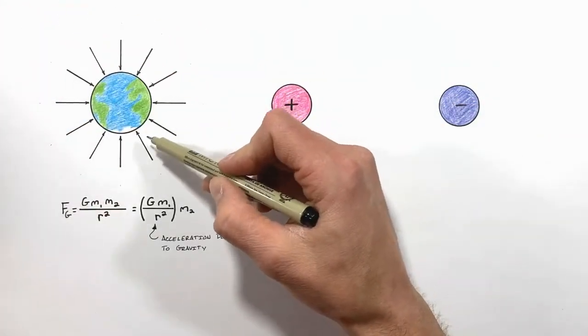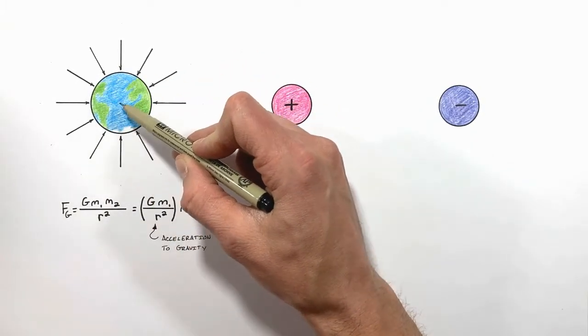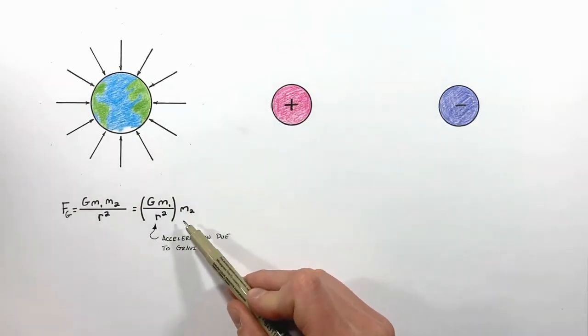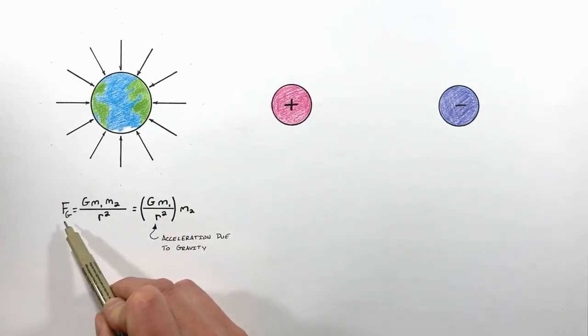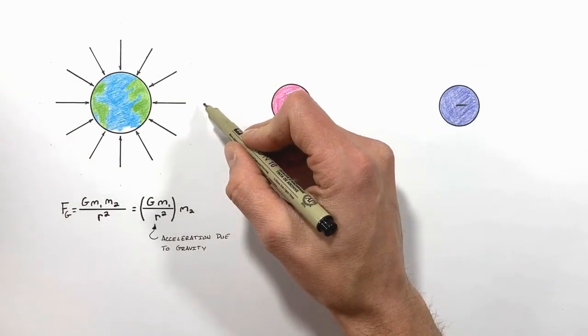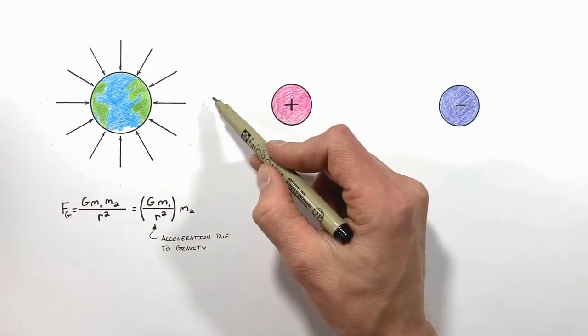These arrows show that regardless of where you are on the surface of the Earth, the acceleration due to gravity is always inward toward the center of the Earth. Now given this function, the farther away a mass is placed from the Earth, the weaker the force by gravity is going to be. We can show that reduction in acceleration due to gravity around the Earth by showing the arrows that are farther away from the Earth as being shorter.